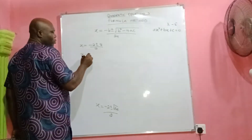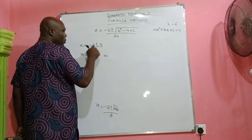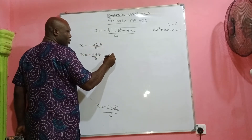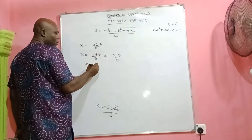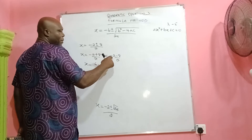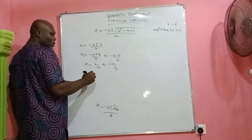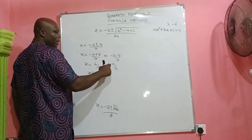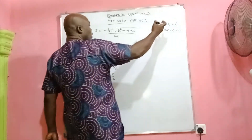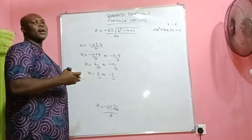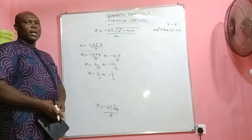It therefore means x = (−2 + 8)/2 or (−2 − 8)/2. That gives us 6/2 or −10/2, which equals 3 or −5. Those are the same values we had when we solved both by factorization and by completing the square — we still get the same results using the formula method.